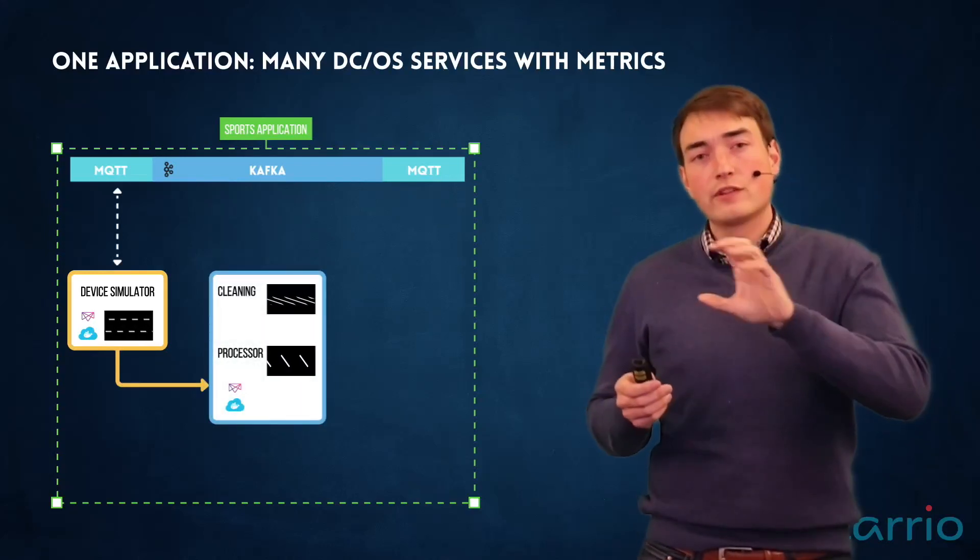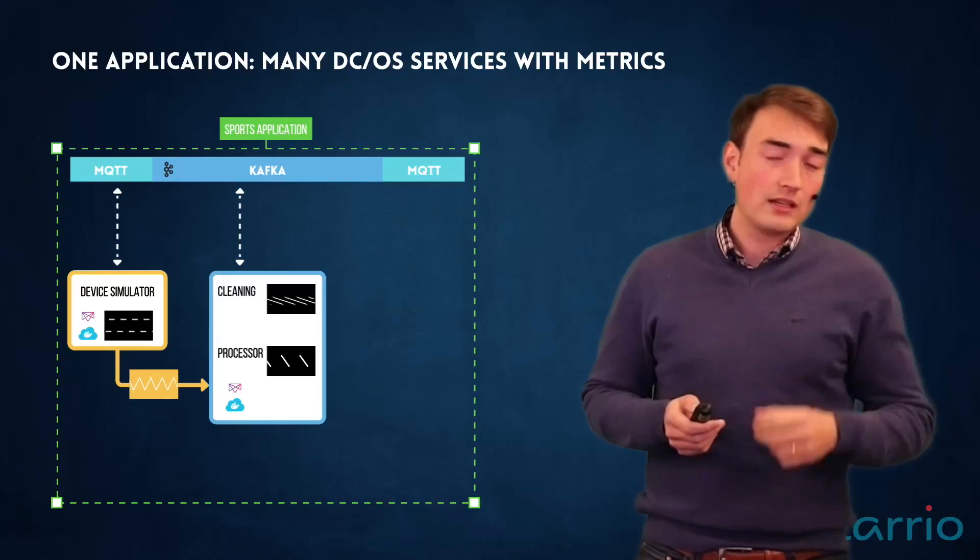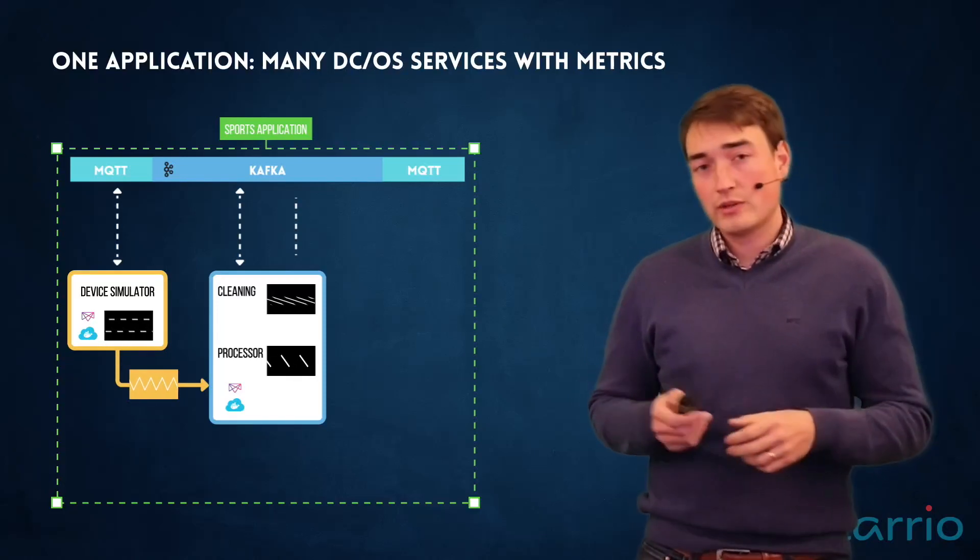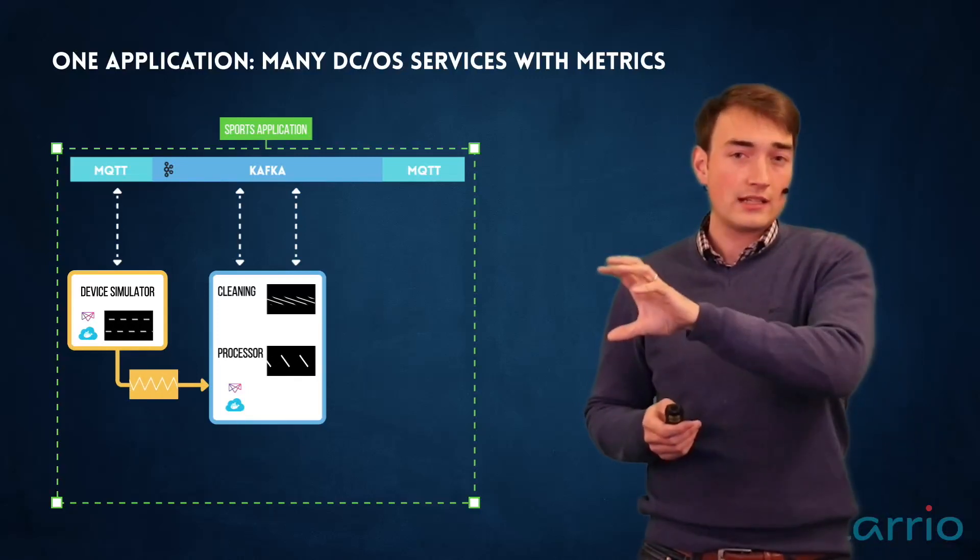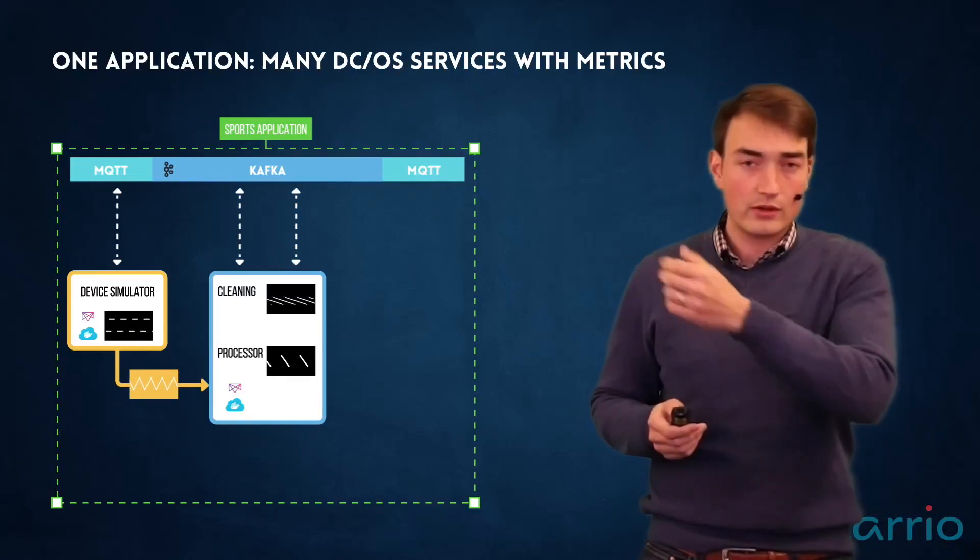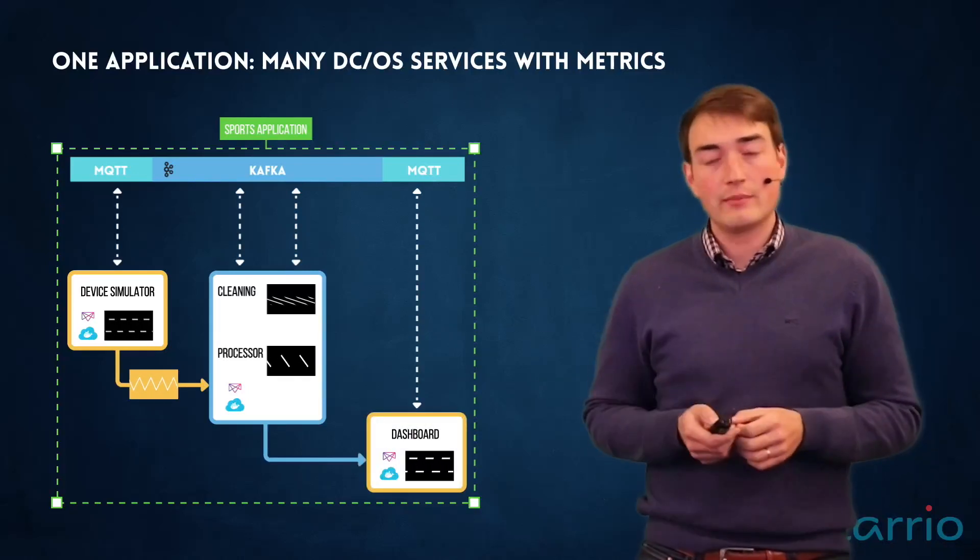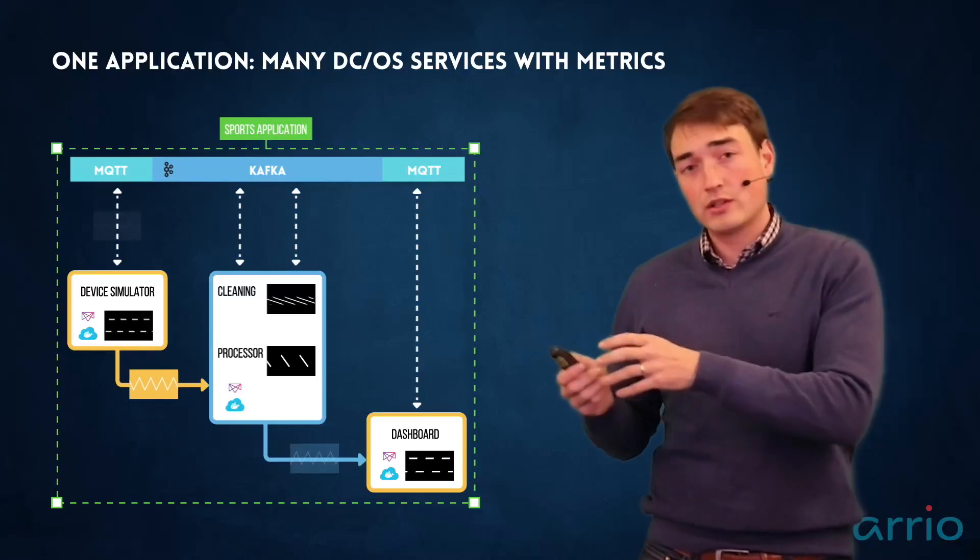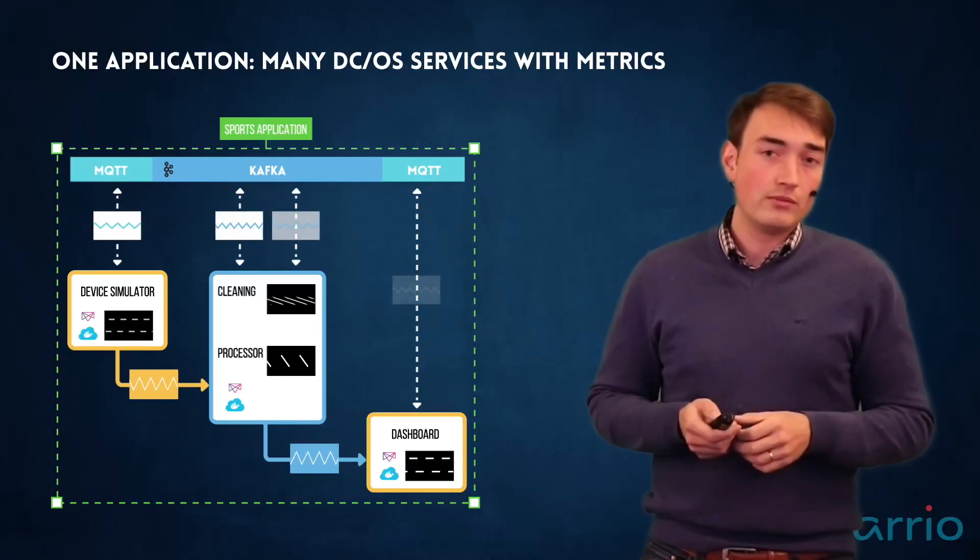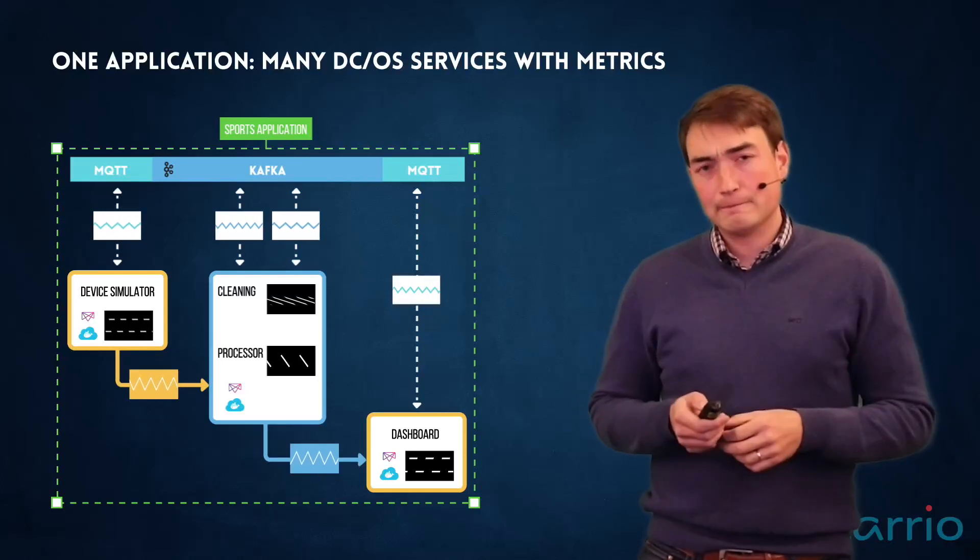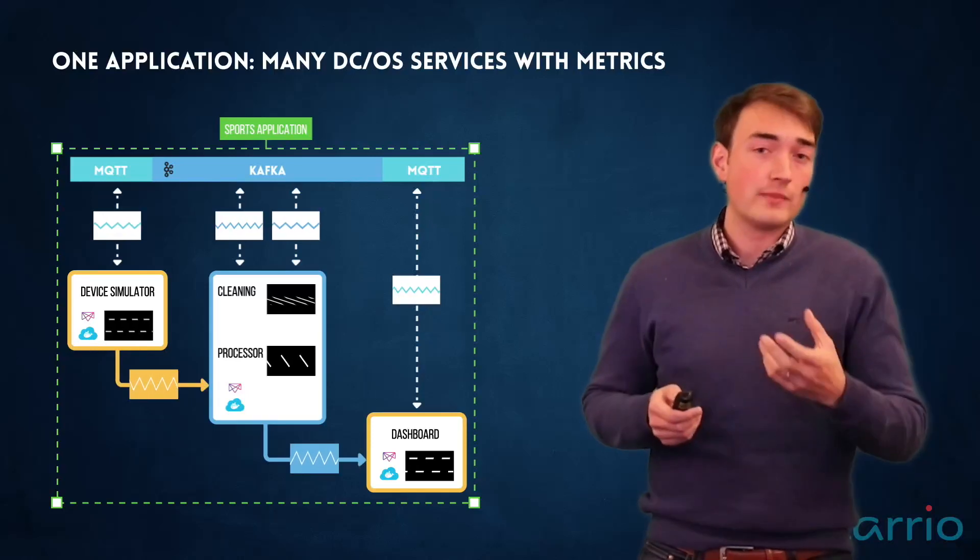Then the data that is flowing into our platform is first cleaned, and this data is coming from Kafka, so we have some Kafka metrics as well. Then this data is further processed down the line by means of the processor, and then the processed data is visualized in our dashboard. Again, the dashboard is connected through MQTT, so also there the MQTT broker and MQTT token provider is available and gives us metrics as well.